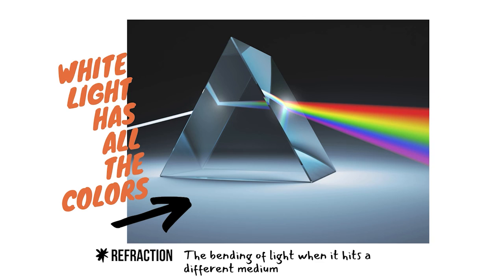You have probably seen an image like this before in your science class. White light has all the wavelengths of the electromagnetic spectrum, including all the colors of the rainbow, and also the ones that we can't even see, like infrared and ultraviolet. When a beam of white light is refracted through a prism, we can see all those colors disperse. White light has all the colors. The color is in the light.